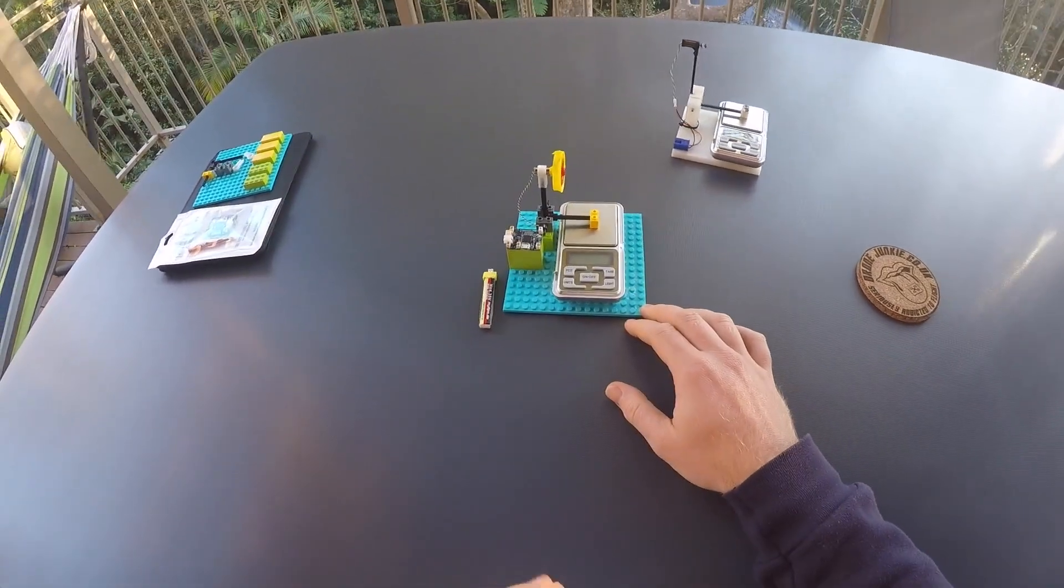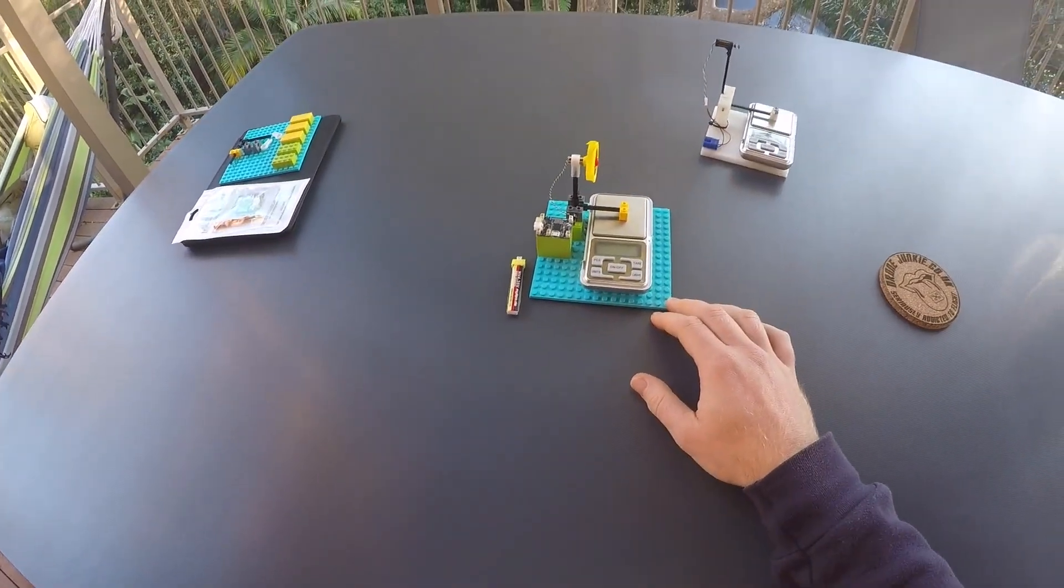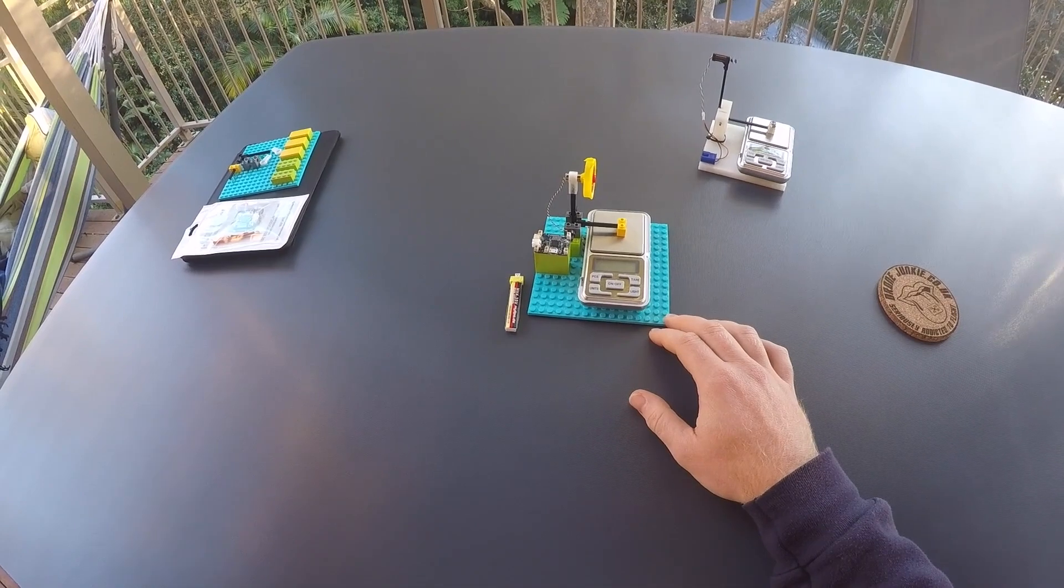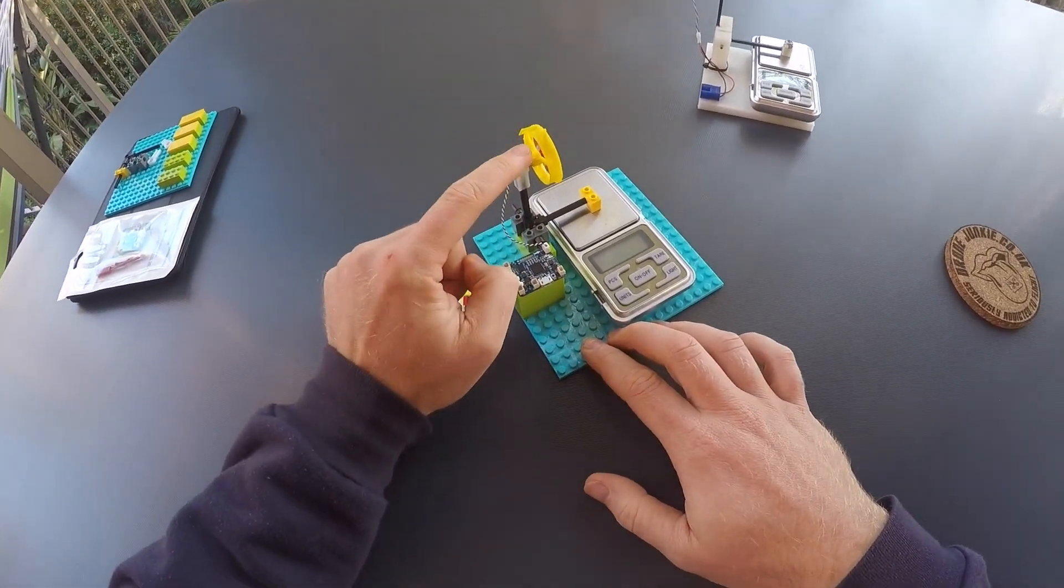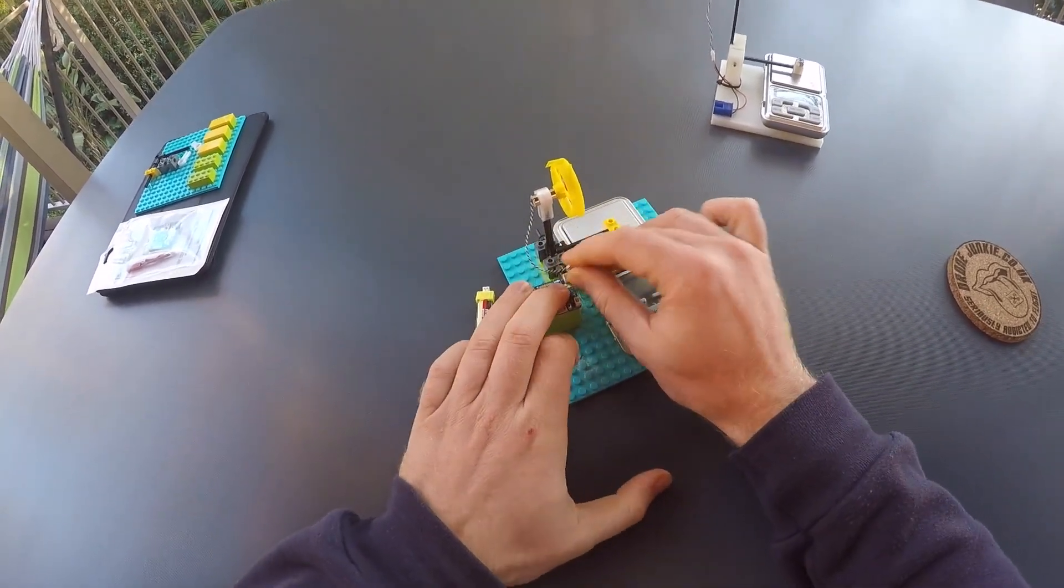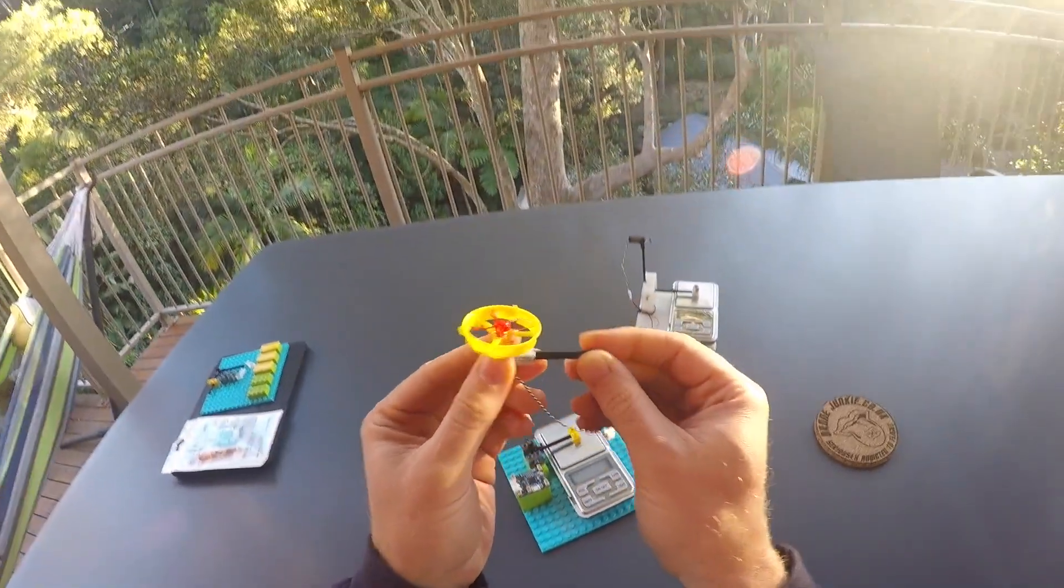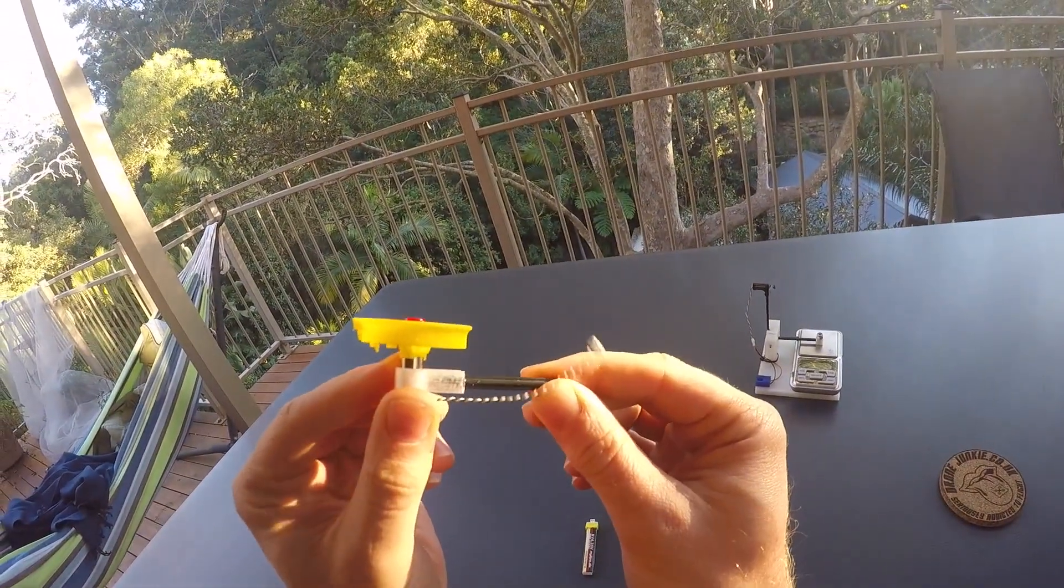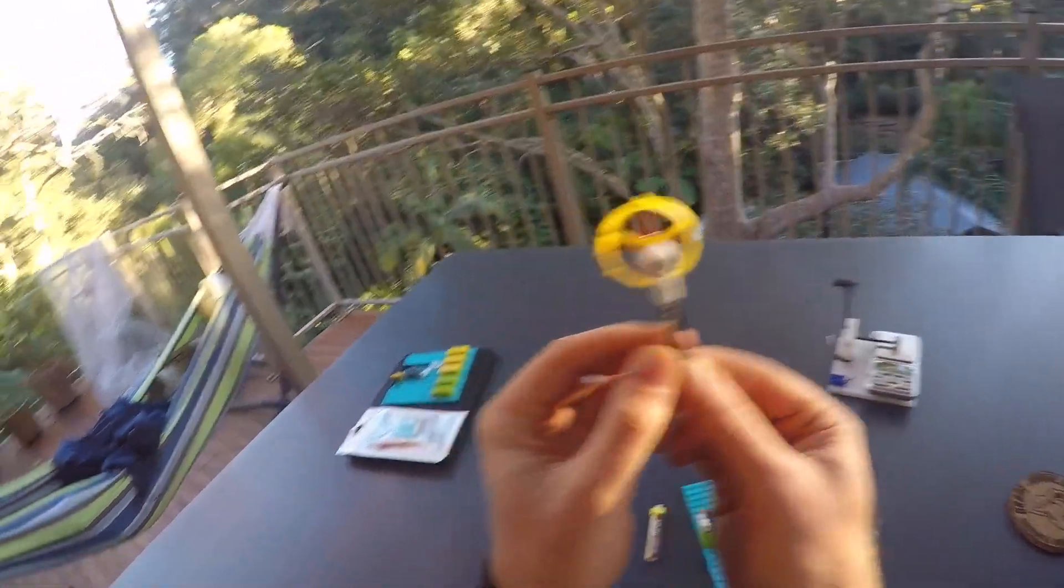I used common Lego parts wherever possible, but there was one part where I just couldn't find a suitable plastic piece in the Lego catalog, and that is the motor mount. So I had to create my own. Let me take it out here to give you a closer look. I have made this mount on my 3D printer.